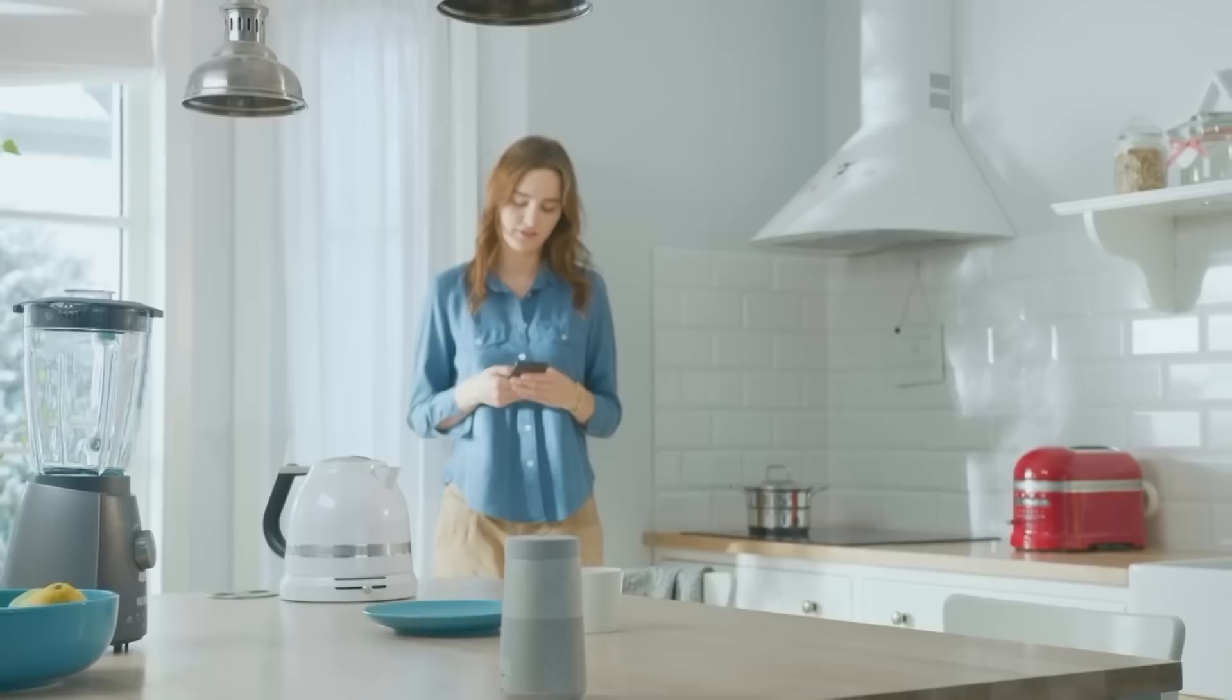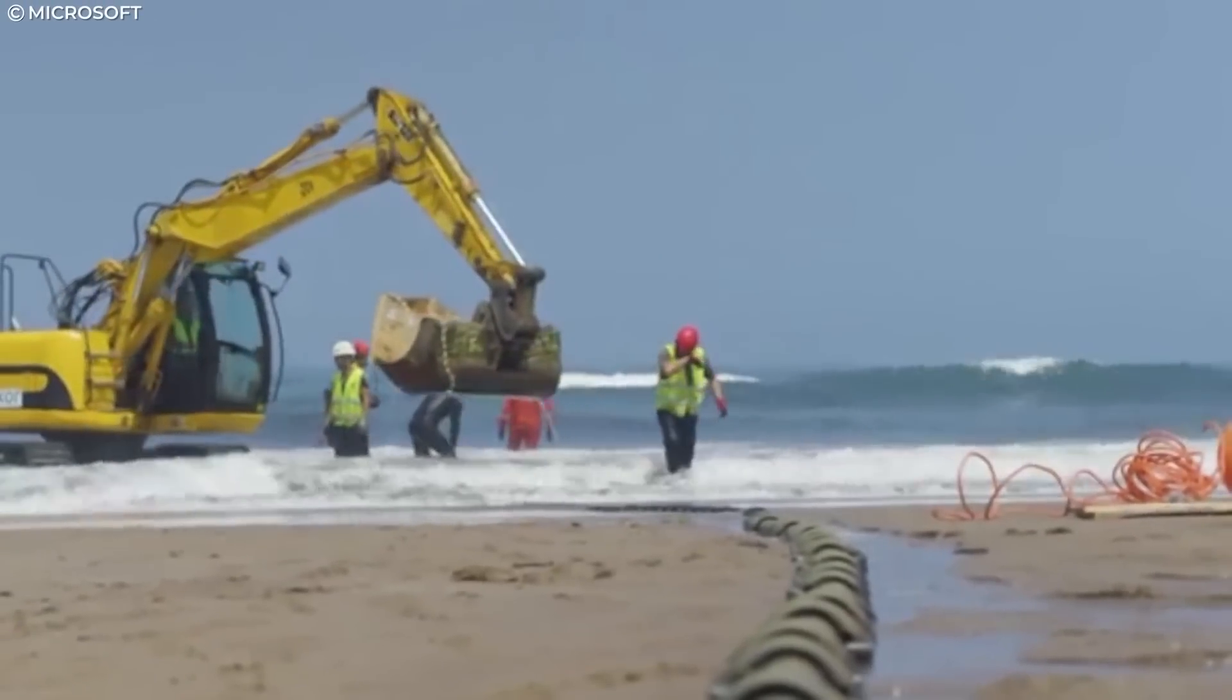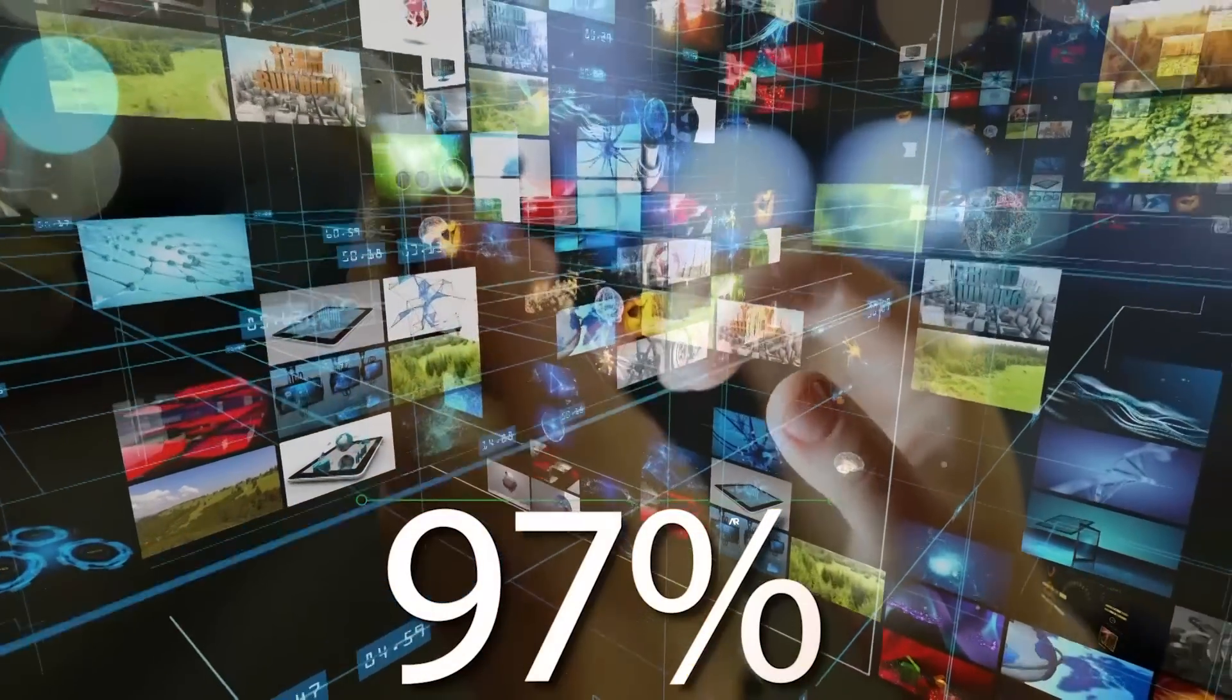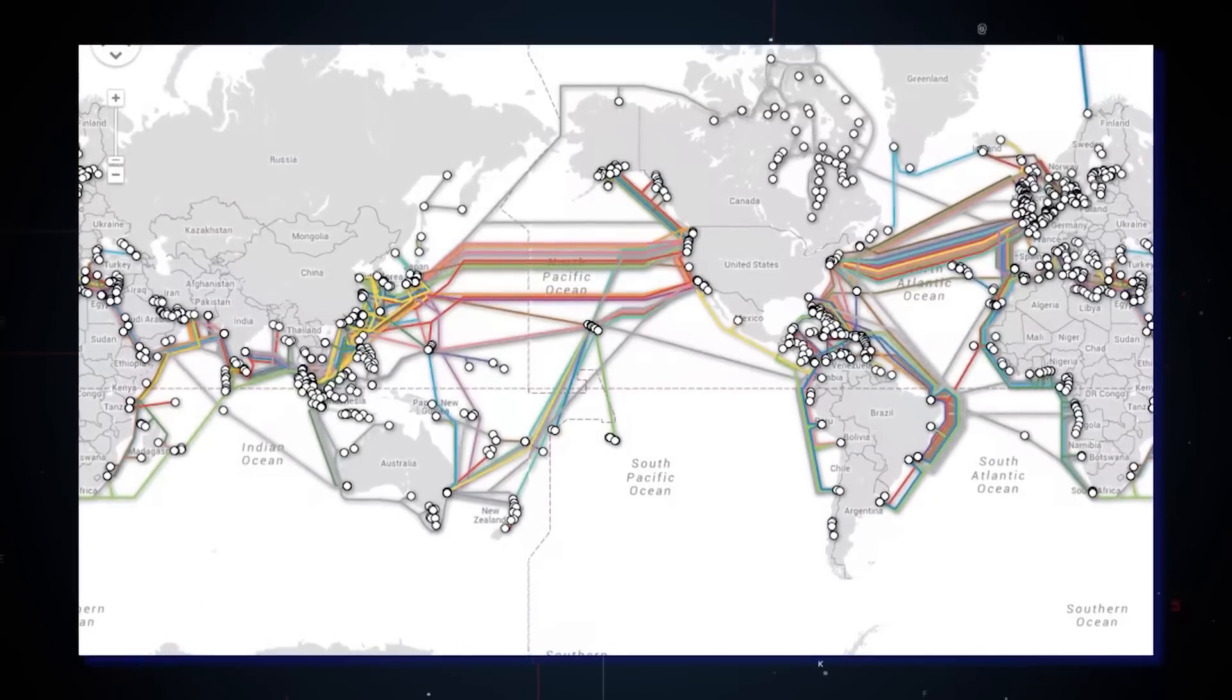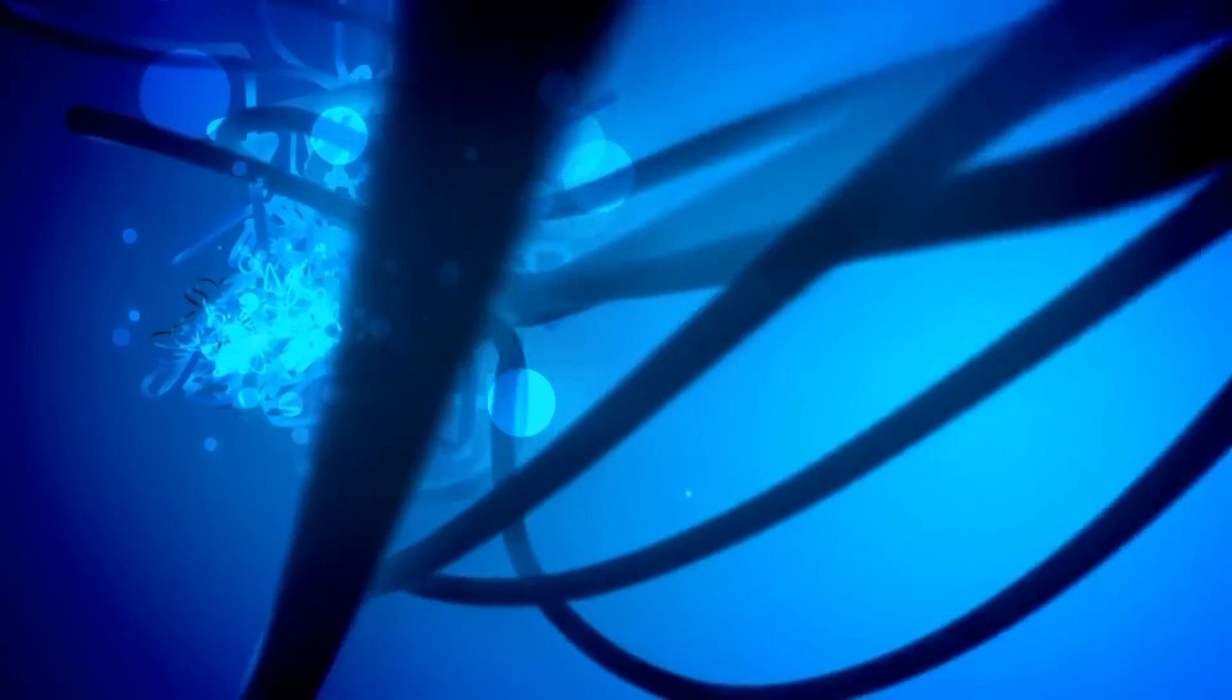No matter where you are located, almost all of your internet data is transmitted through a hidden network of undersea cables. In fact, 97% of all internet traffic runs through this hidden infrastructure of thousands of miles of fiber optic cables that zigzag our ocean floors.